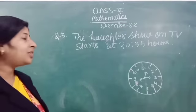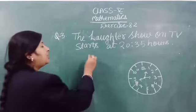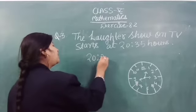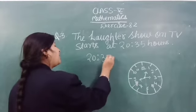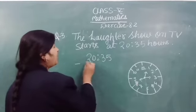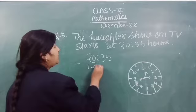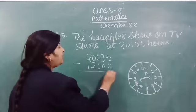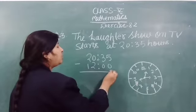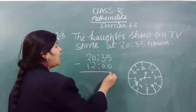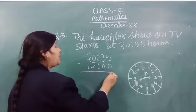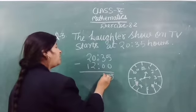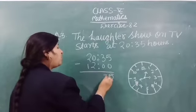How can we convert it? So, 2035 minus 12. This is noon shift time. So: 5 minus 0 is 5, 3 minus 0 is 3.